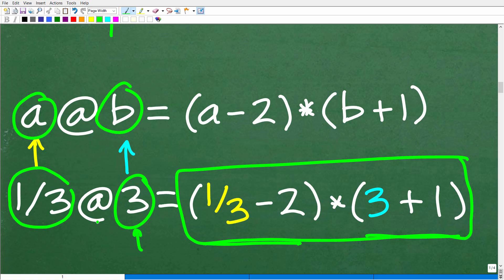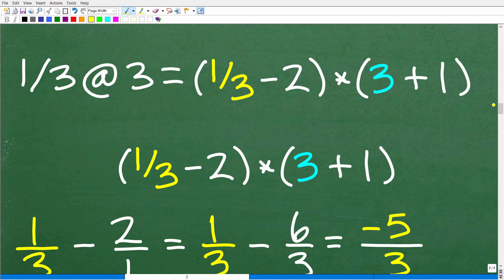Alright, so now we're just talking about basic arithmetic, and let's go ahead and take the next step. So we have one third at three. We know that this symbol right here, we know the definition or this mathematical definition at means. It means do this. So we have one third minus two times three plus one. And so now this just becomes a basic arithmetic problem. Alright, so three plus one, obviously this is going to be four.